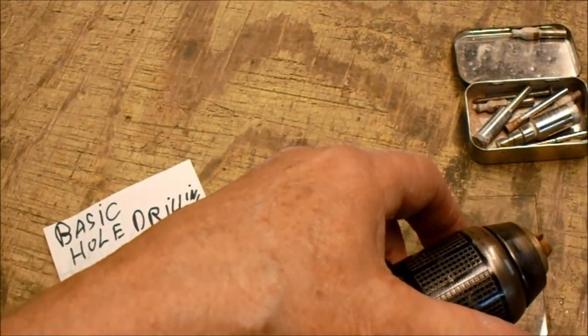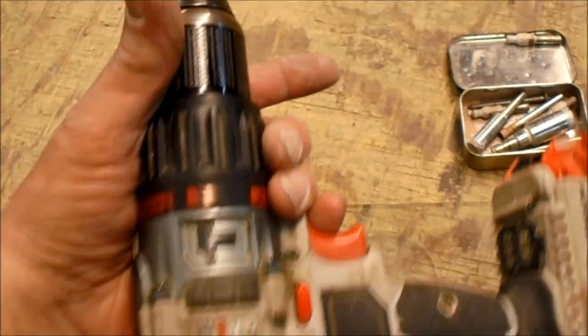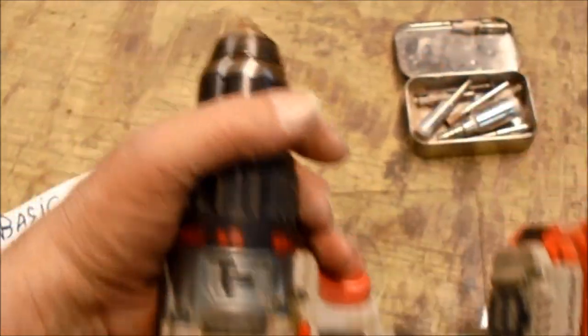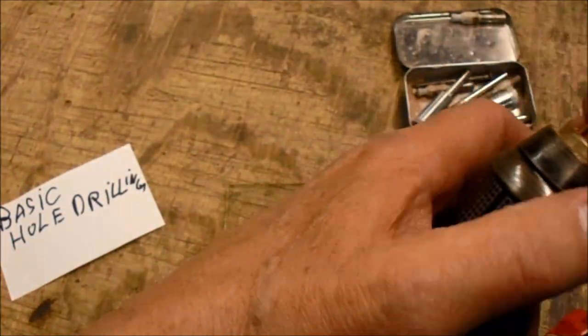But for hole drilling, I've got a cordless drill. This thing fits in the chuck, obviously tighten it down. It has variable speed.